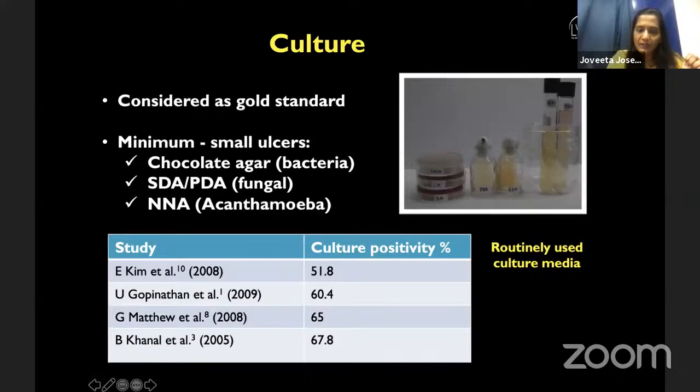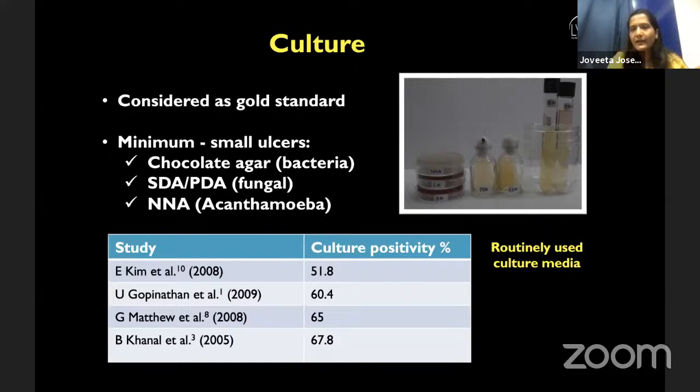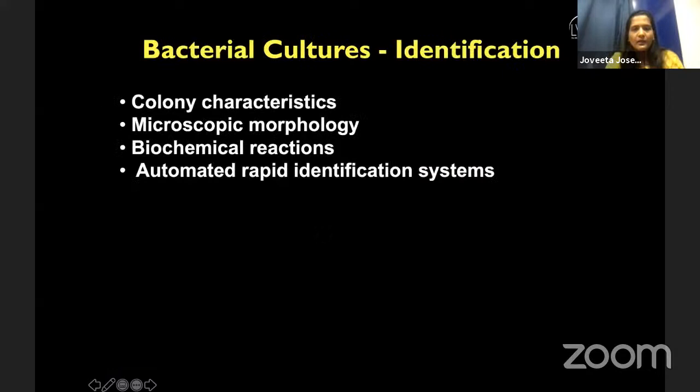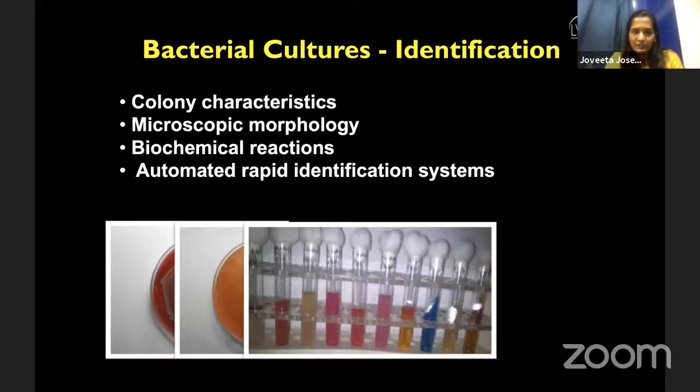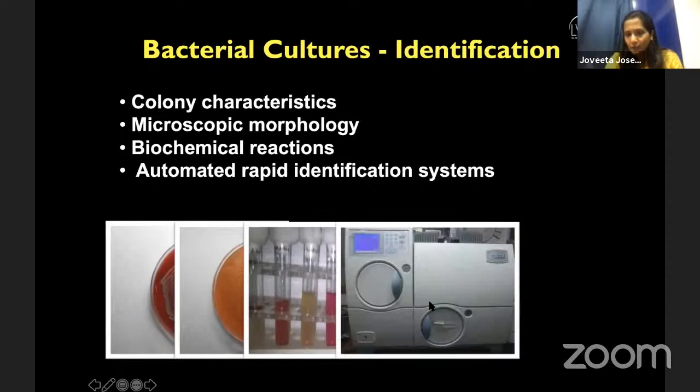Culture remains the gold standard. Microscopy depends on the expertise of the individual looking at the smear — if you are not familiar with the structure, you can miss it for an artifact or cell debris. Whatever grows from culture has come from the patient material. Once it grows, we identify the bacteria by colony characteristics, microscopic morphology, biochemical reactions, and nowadays the automated rapid identification system called the VITEK-2, which tells us the name of the bacteria, fungus, or candida yeast grown from the patient.